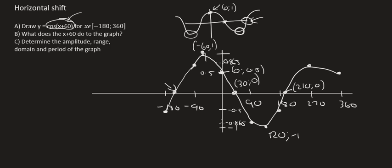And then this x-intercept over here, well that's going to be this one, which usually takes place at negative 90. So now that it's been moved 60 degrees to the left, it's going to be negative 150.